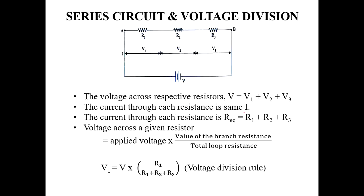In a series circuit, the current is the same throughout. If one bulb in a series light string is broken, the entire series light goes out — no light will glow. This is based on the series circuit concept: series means current is the same.